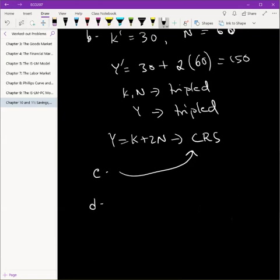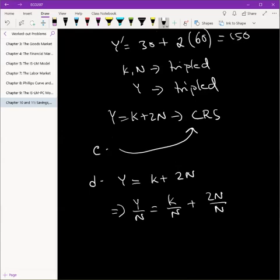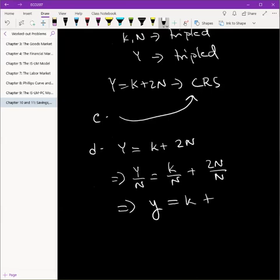Let's take a look at part D. Now we have to write this function as a relation between output per worker and capital per worker. That's easy enough. This is the overall scenario in the economy. Now we want to do this in terms of each worker. So we don't care how much production there is in the economy. What we want to find out is how much production is there for each worker. So what we do is we divide everything by N: K by N plus 2N by N.